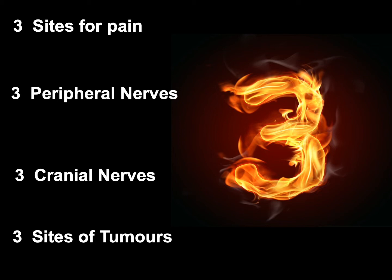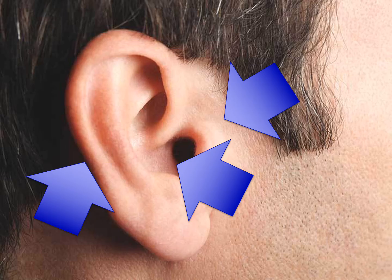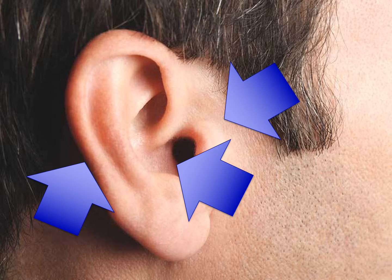If you look at your ear, there are three locations for the pain. The pain can come in the preauricular region, it can be within the canal — deep auricular — or it can also be post auricular, around the ear. Start by identifying the location: preauricular, deep auricular, or post auricular.